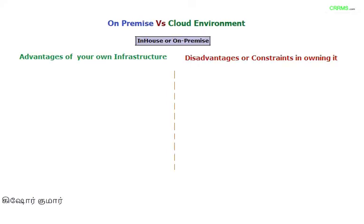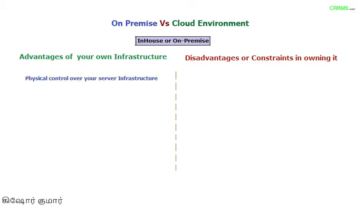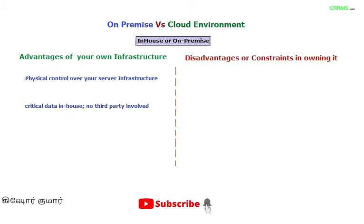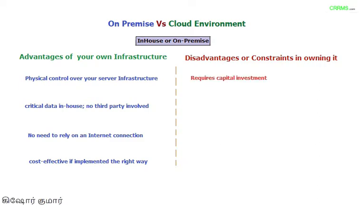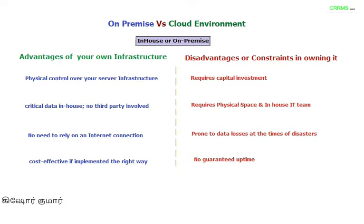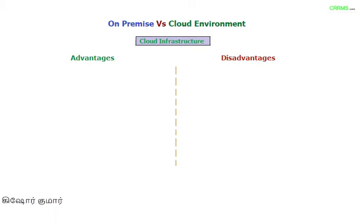Comparing two models — deploying your own server infrastructure versus going for a cloud environment. Advantages of on-premise infrastructure: physical control over servers, critical sensitive data is not shared, no need to rely on an internet connection, and it's cost-effective if implemented correctly. Disadvantages: huge capital investment for hardware and software, recurring expenses for physical space and IT team, and it's prone to data loss during disasters like earthquakes, so there is no guaranteed uptime.